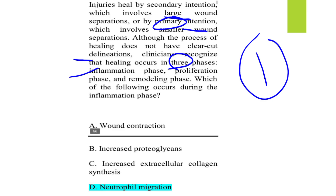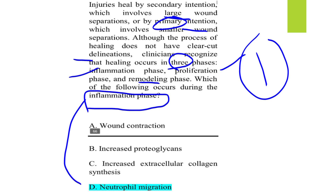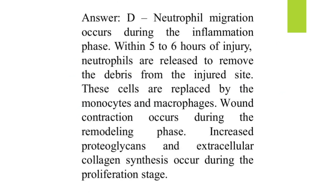The three phases of healing are inflammation, proliferation, and remodeling. The question asks what occurs during the inflammation phase. The correct answer is option D: neutrophil migration. Within five to six hours of injury, neutrophils are released to remove debris from the injured site.